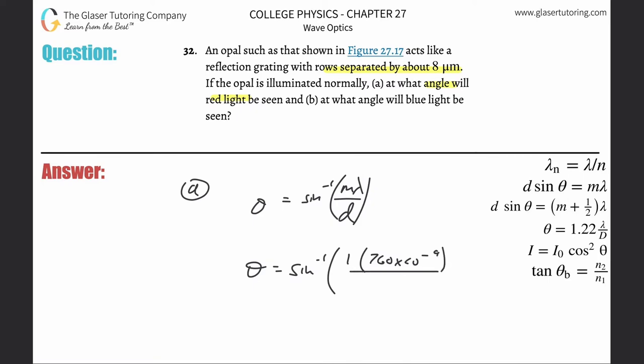And then divide that by the distance. It says the rows are separated by about eight micrometers. So they told you the separation there between the slits. So that's times 10 to the minus six. So this is inverse sine of 760 times 10 to the minus ninth divided by eight times 10 to the minus sixth.